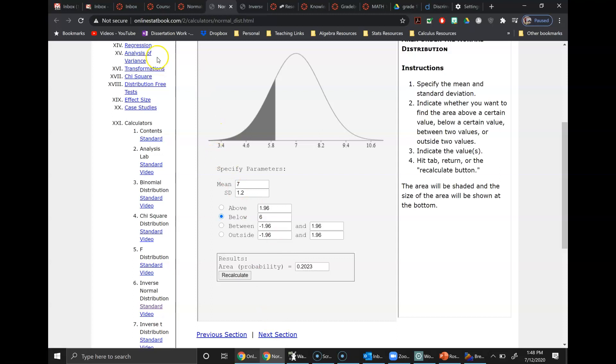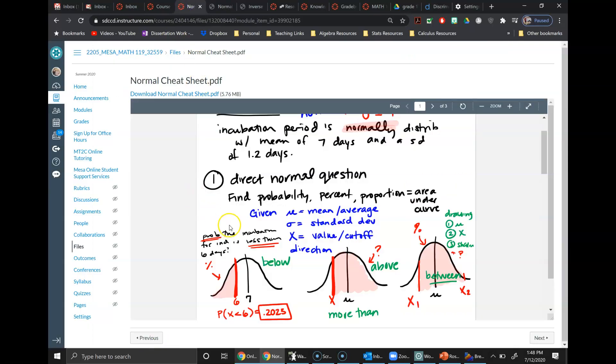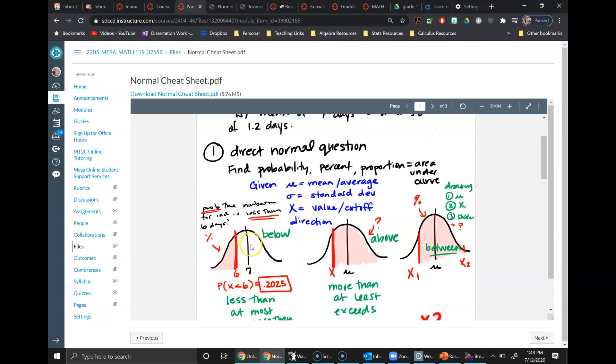On the worksheet you have to draw me a curve. In terms of the curve, I expect to see three things: that is the mean marked, the cutoff marked, and the shading in the correct direction. Ideally you do what I have here, which is a nice little question mark for the things that you don't know, but that's not required.